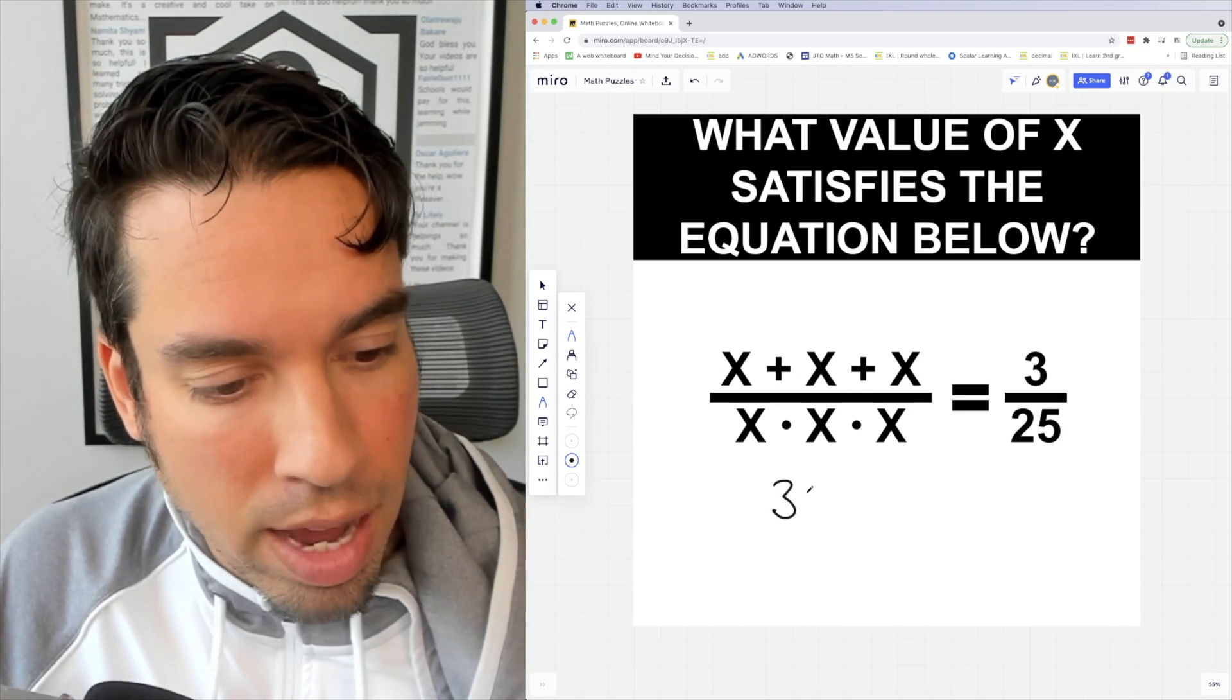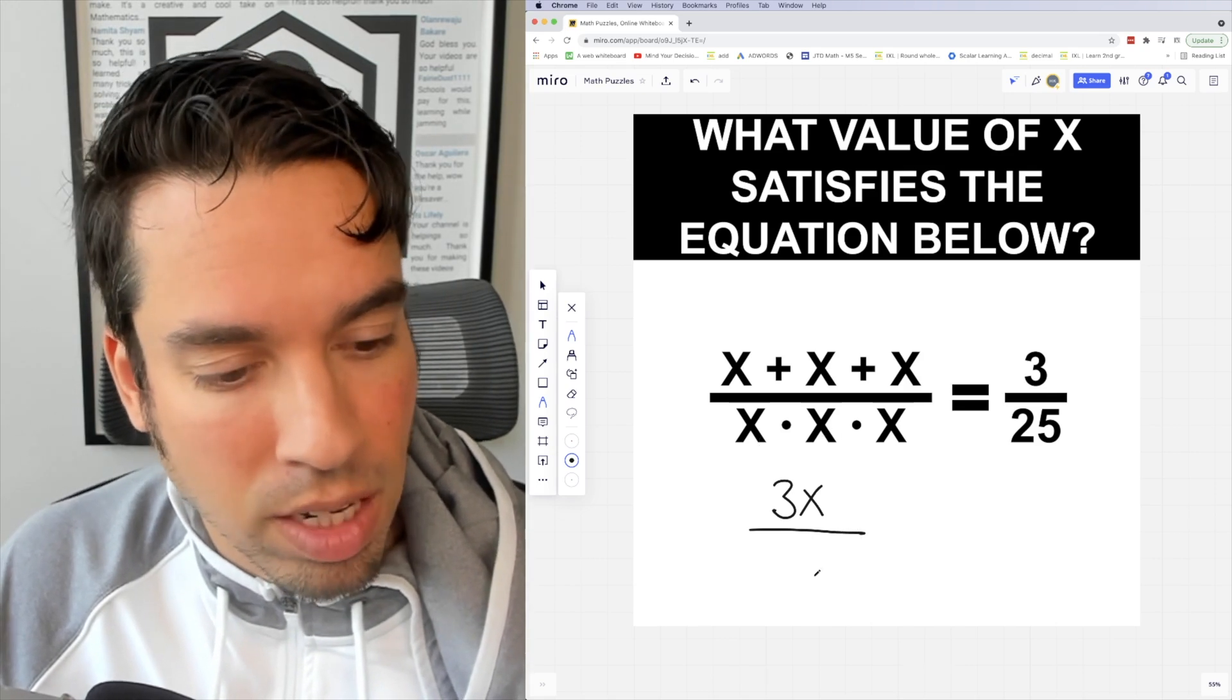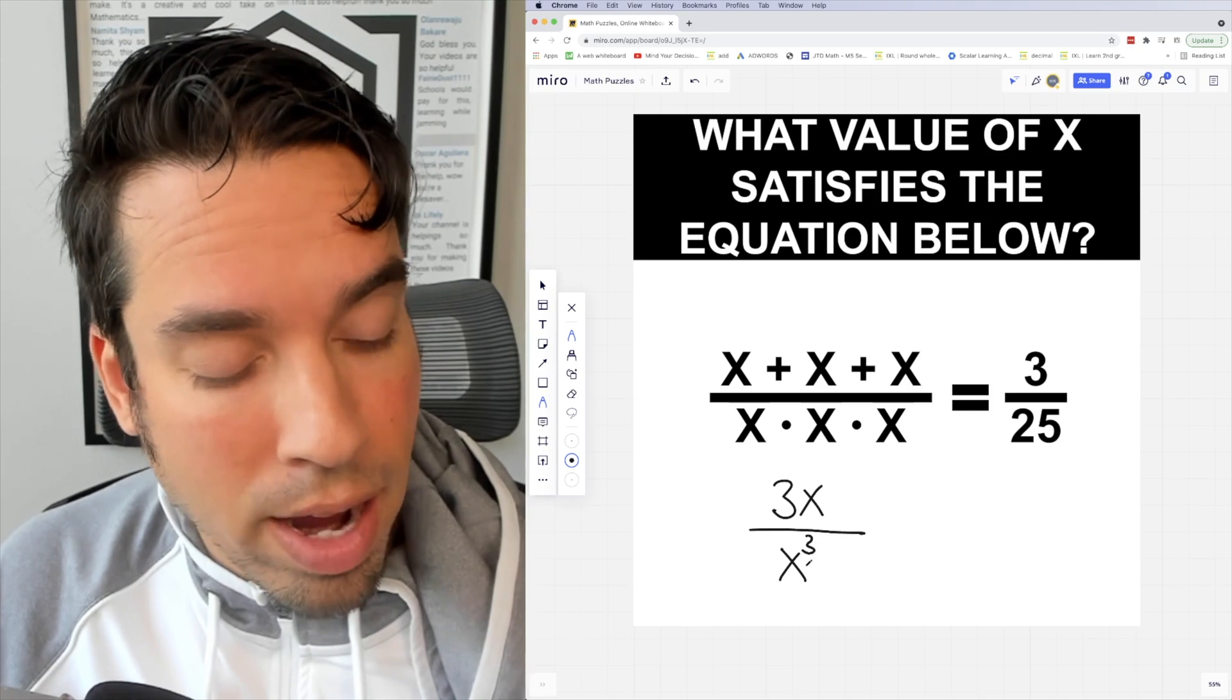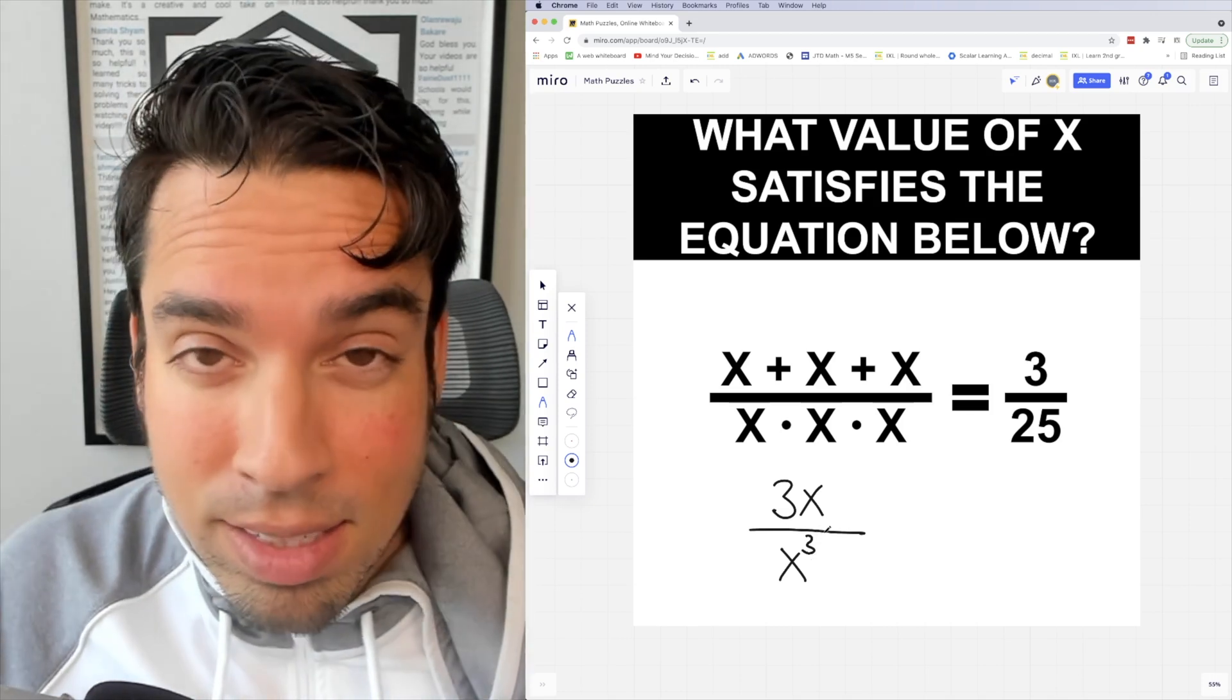of course 3x. And on the bottom, I've got x times x times x, which is of course x cubed. When I have x to the first power over x cubed, you can do a canceling out, so